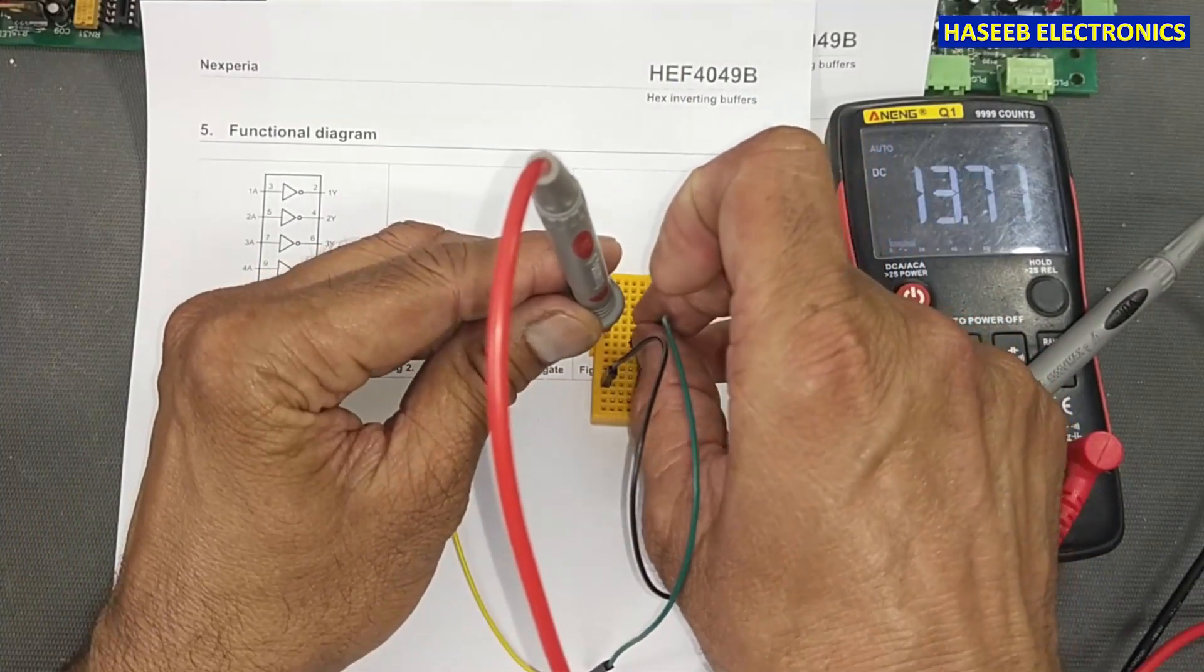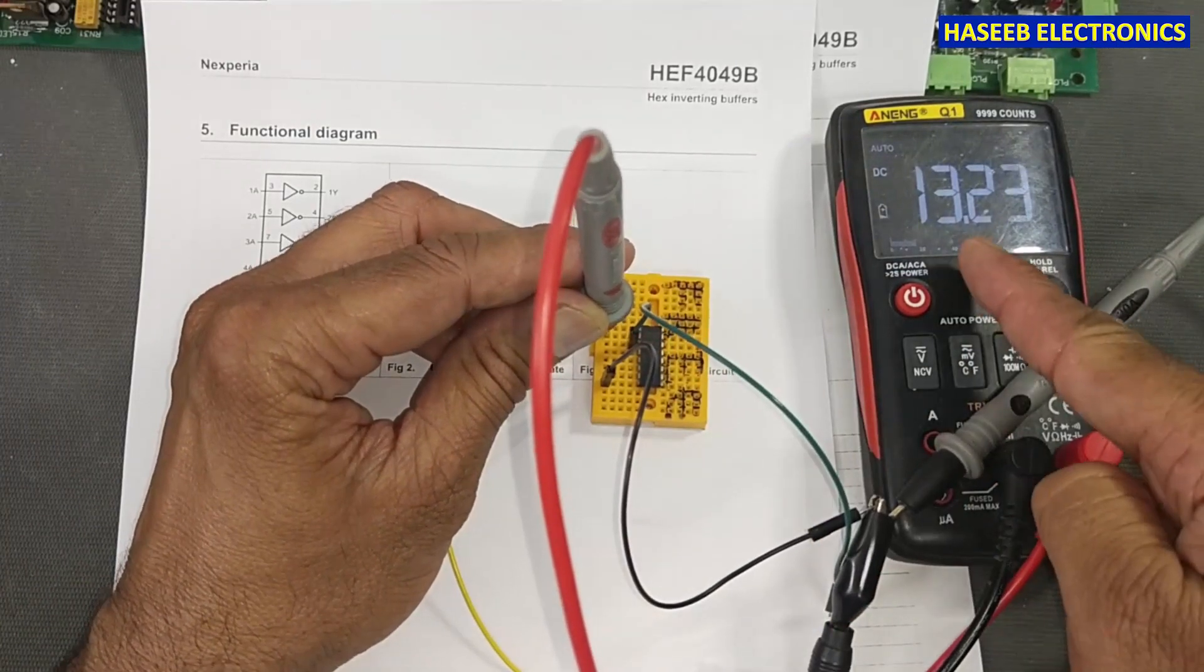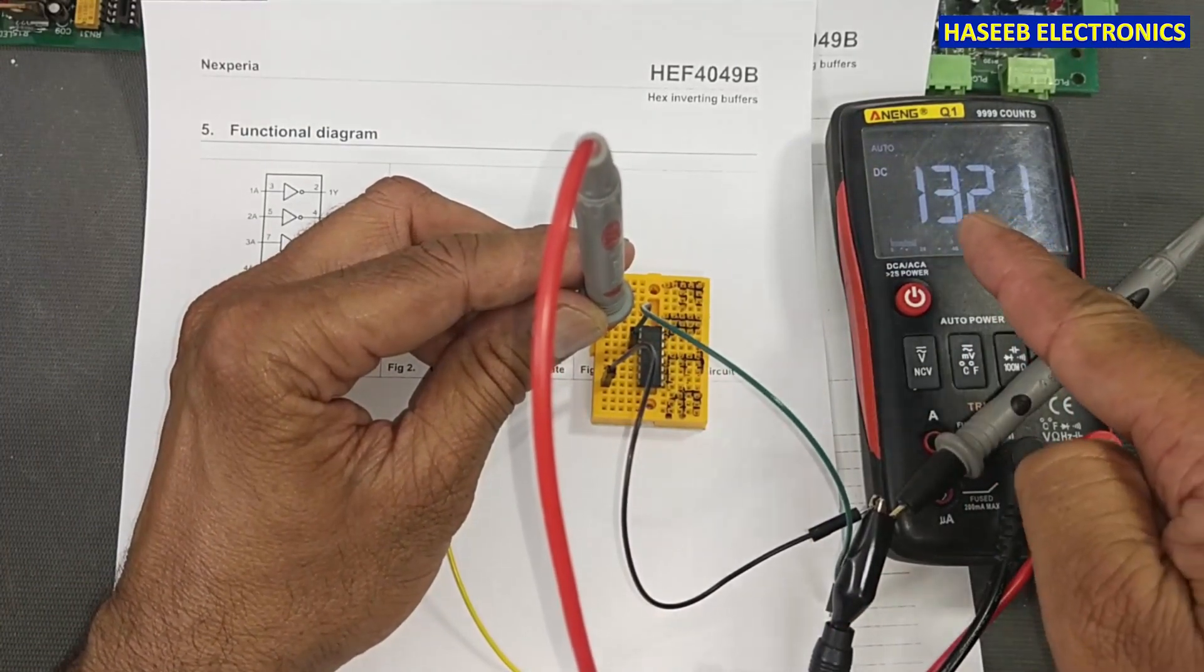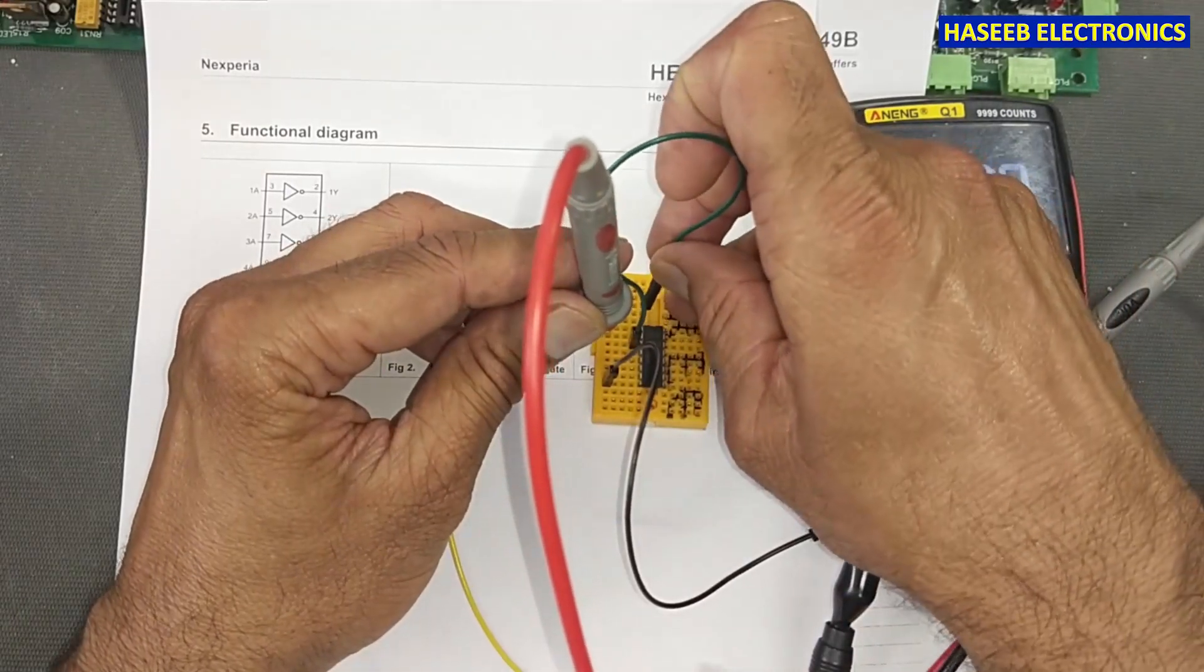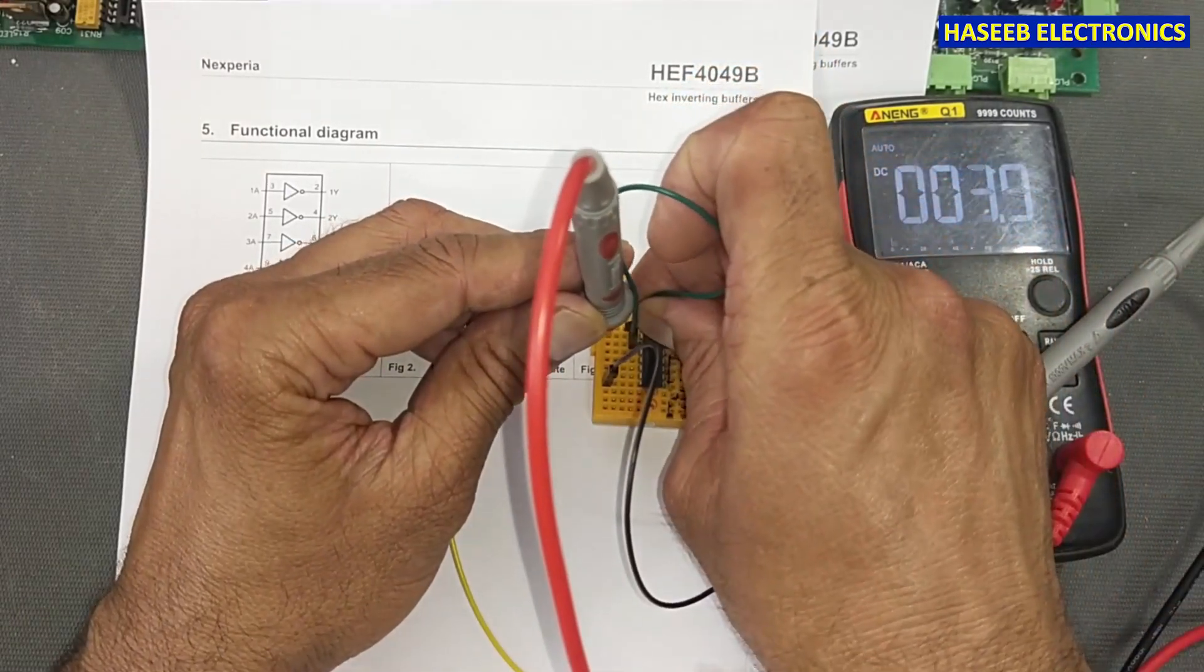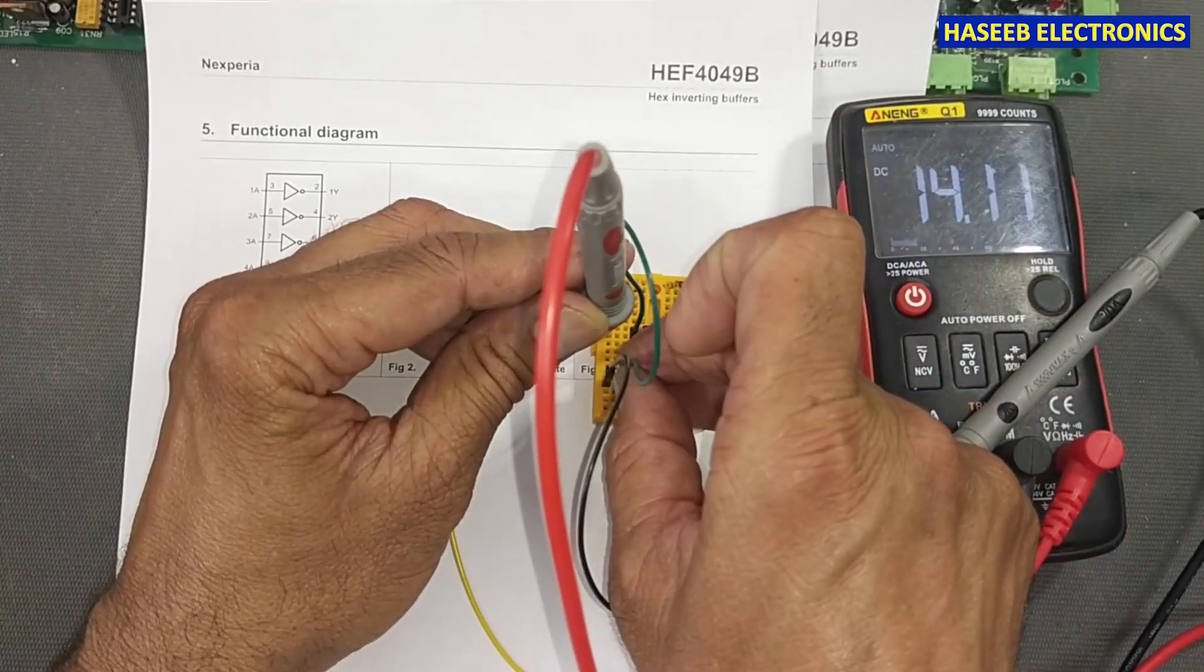Here is pin 3, that's the input. I connected the multimeter at pin 2. Now it is giving 13 volts. Now I connected to positive voltage, it is now low. I will connect to ground, it is high.